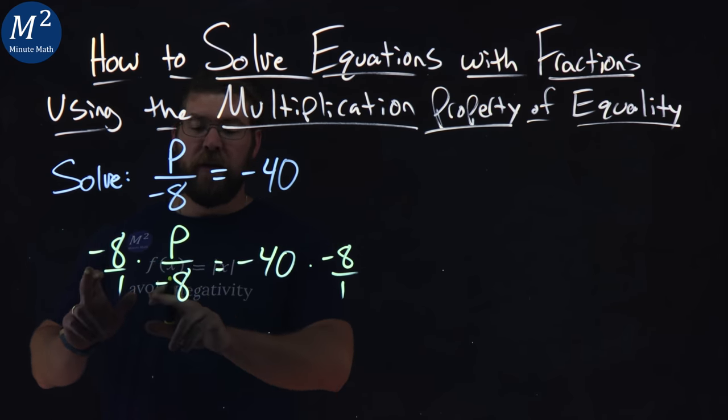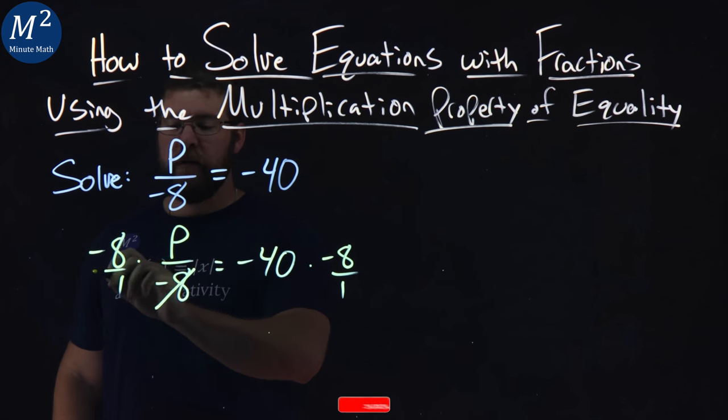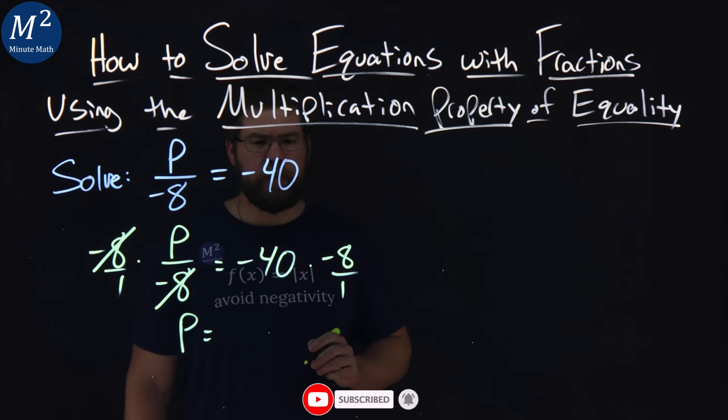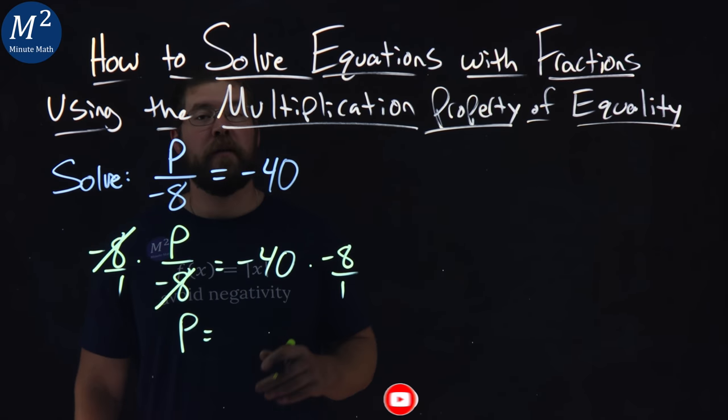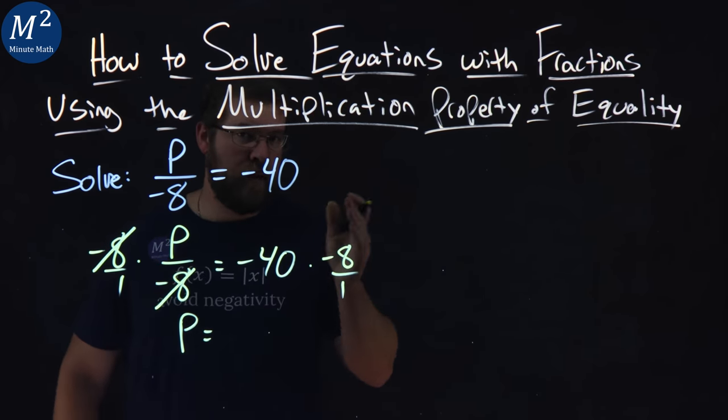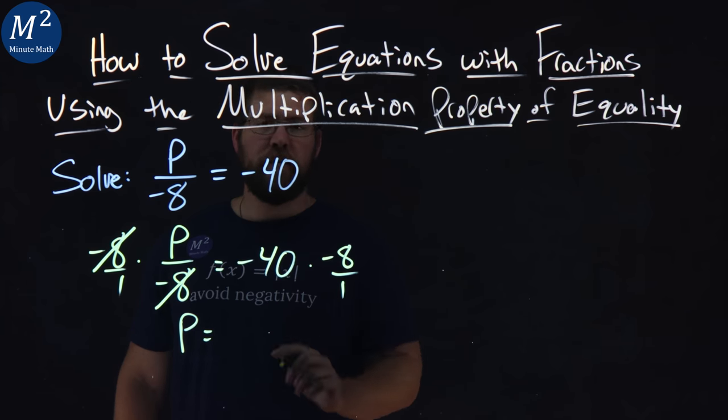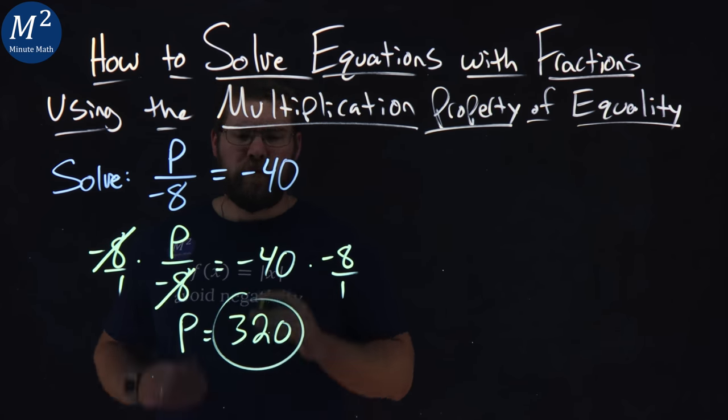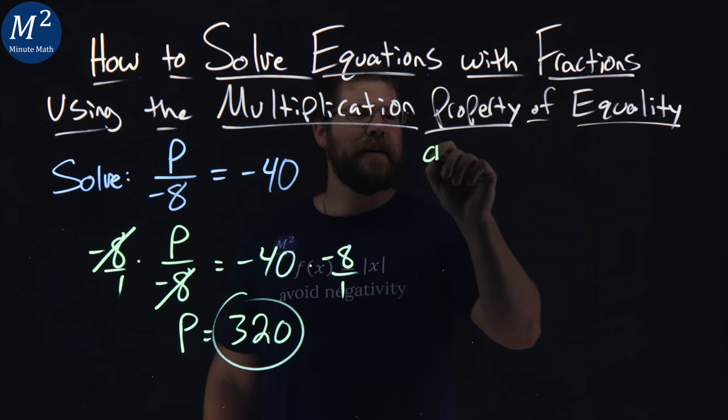And what this will do is cancel out the negative 8s on the left. Denominator, numerator cancels. P is by itself. Now, negative 40 times negative 8 is going to be a positive number. Negative times a negative is positive, and 40 times 8 is 320. So 320 is our answer here, but we want to check it.